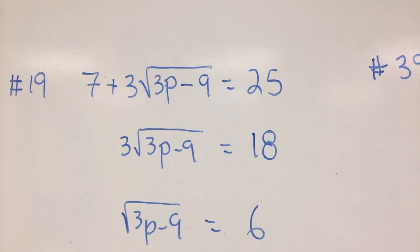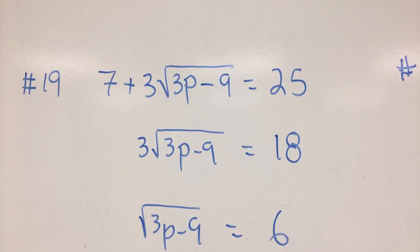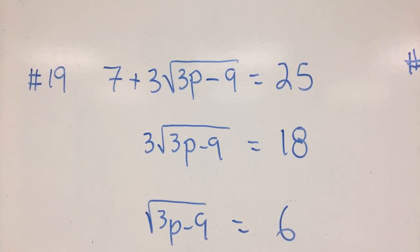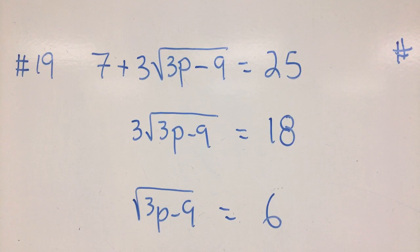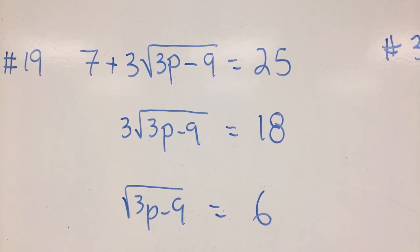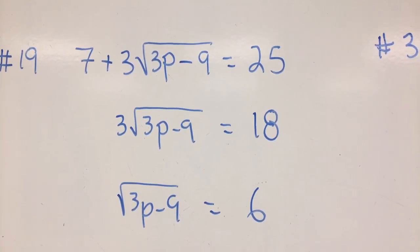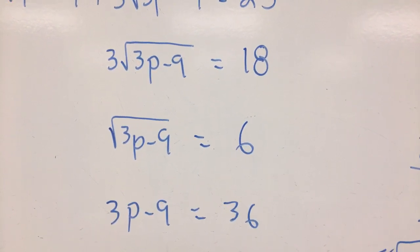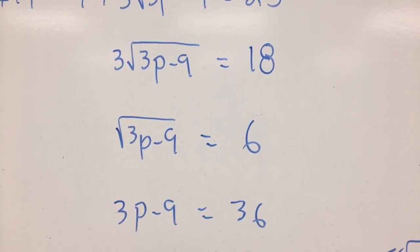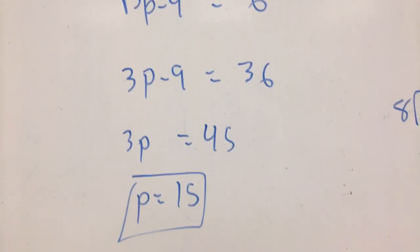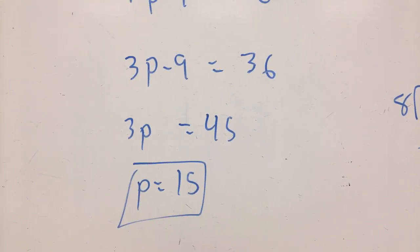Here's number 19. Not bad. Looks a little scary, but not bad. Get rid of the 7. Divide by 3. And then square. Now notice you've got the square root of 3P minus 9 is equal to 6. When you square both sides, you get 3P minus 9 is equal to 36. Add 9. Divide by 3. And P is equal to 15.